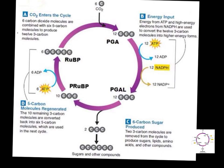If you look at the first step, it sort of breaks this down into four different parts: A, B, C, and D. If we just read A, it says, 'Six carbon dioxide molecules are combined with six five-carbon molecules to produce twelve three-carbon molecules.' I think this kind of description of the process reads almost like a math problem.